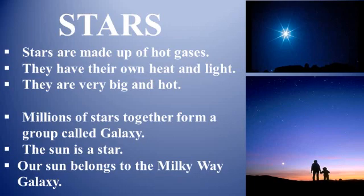Stars are not uniformly distributed in the universe. They occur in groups — millions of stars together form a group called a galaxy. The sun is a star; our sun is an ordinary, medium-sized star. It looks bigger than the other stars because it is closer to us than any other star. Our sun belongs to the Milky Way galaxy, also known as Akash Ganga.